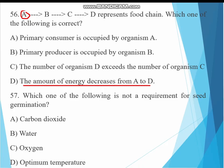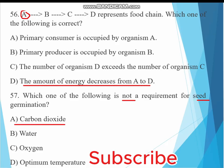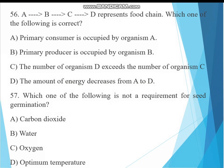Question 57. Which one of the following is not a requirement for seed germination? A. Carbon dioxide, B. Water, C. Oxygen, D. Optimum temperature. The answer must be carbon dioxide is not a seed germination requirement.